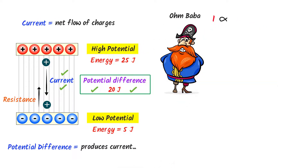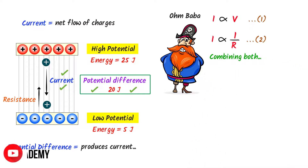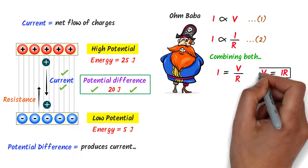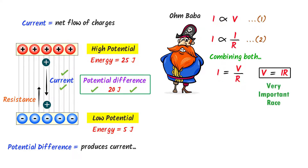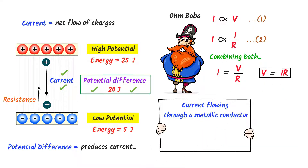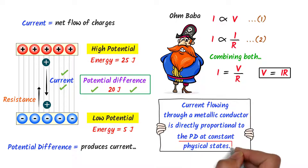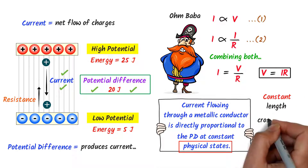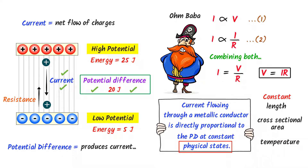Using this fact, Ohm states that current is directly proportional to the potential difference, and current is inversely proportional to the resistance. When we combine these two equations, we get I = V/R, or V = IR. We define Ohm's Law as: current flowing through a metallic conductor is directly proportional to the potential difference at constant physical state. By physical state, we mean constant length, cross-sectional area, resistance, and temperature. If we change length, cross-sectional area, or temperature, current is no longer proportional to potential difference.